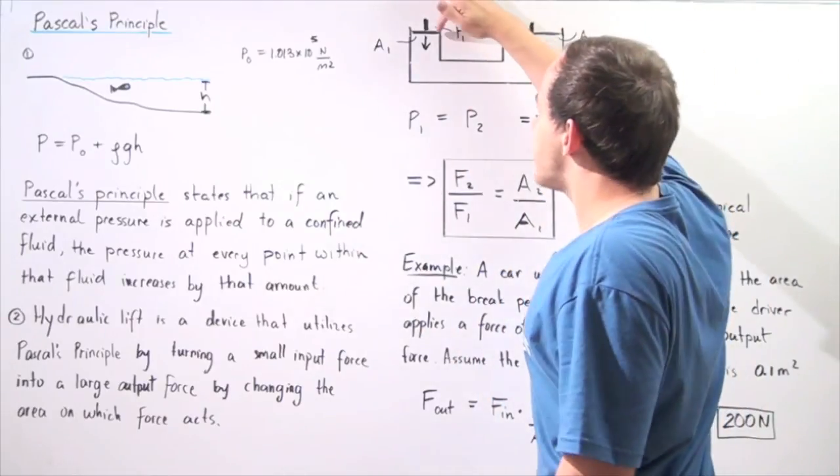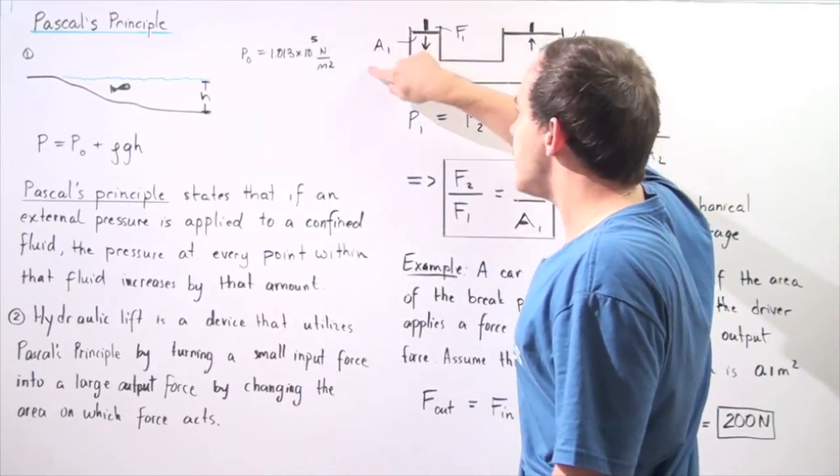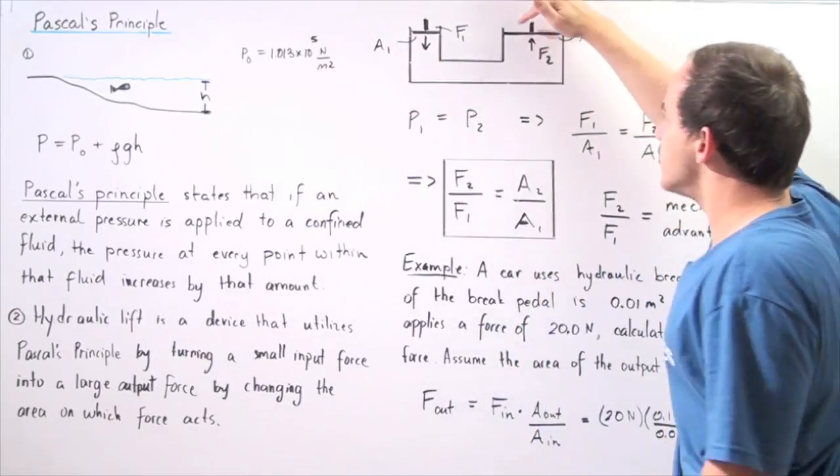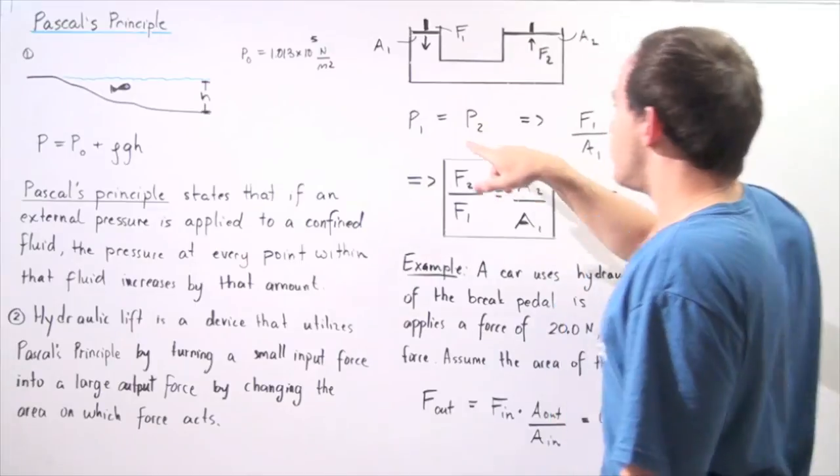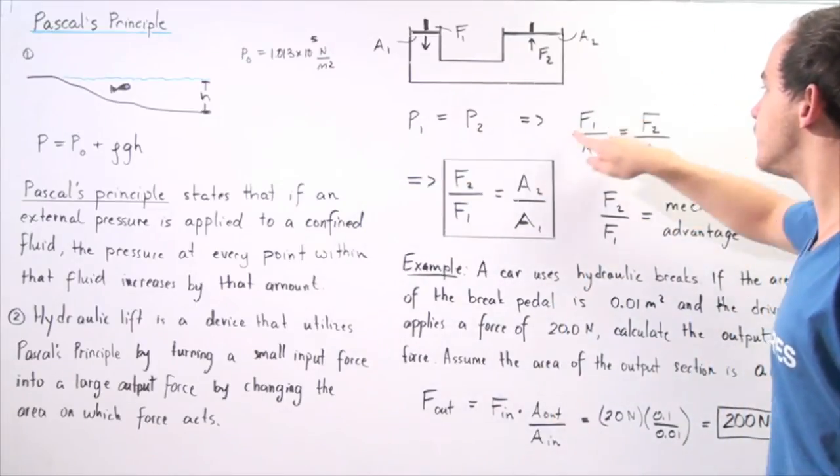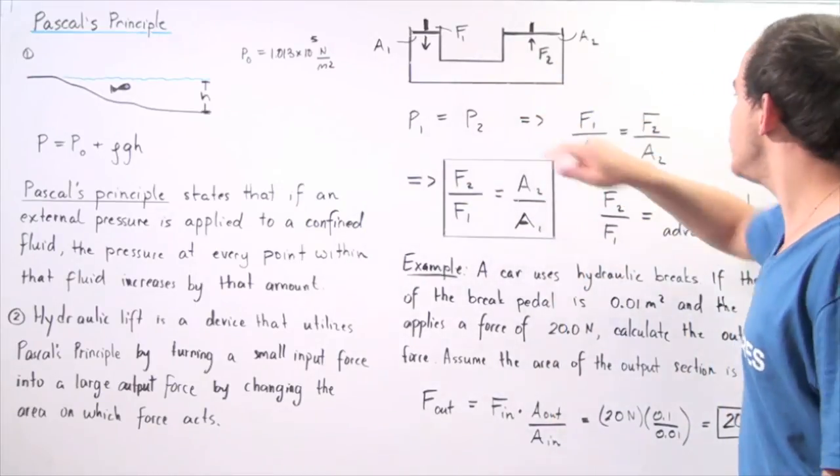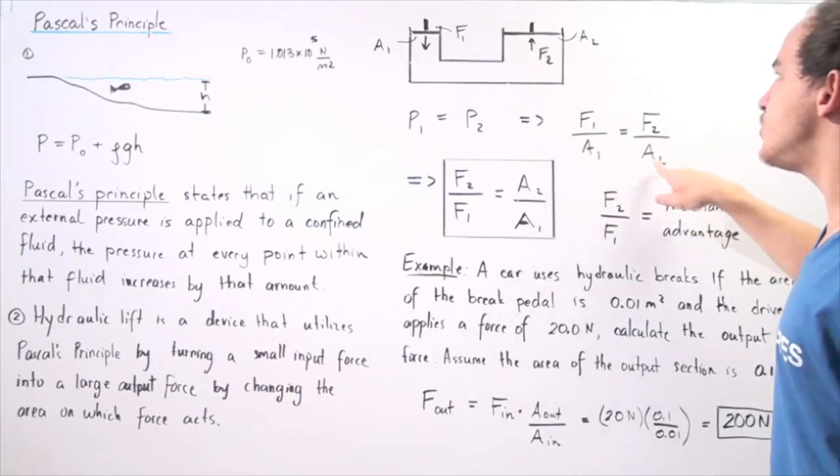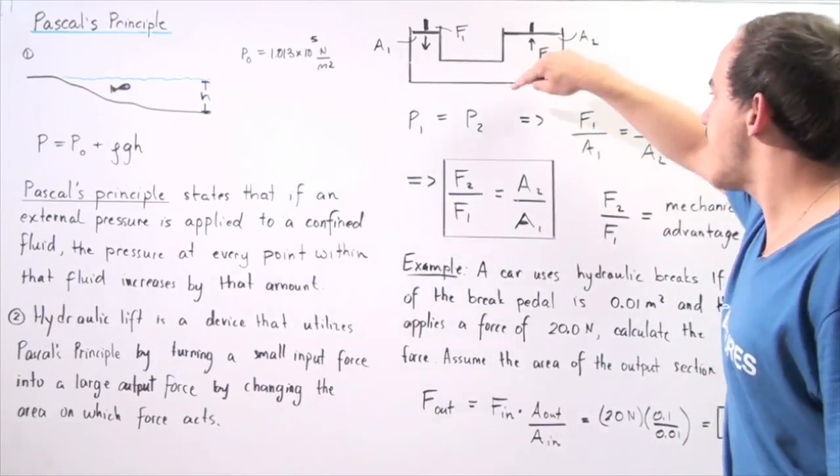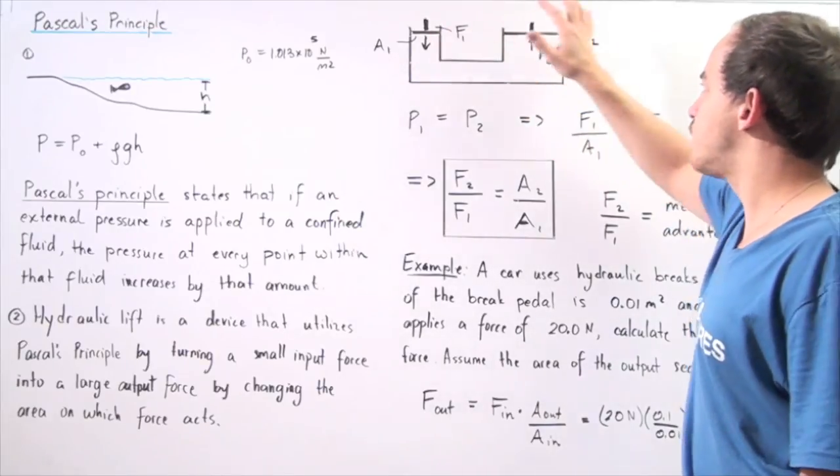Notice that the area of this piston A1 is smaller than the area of this piston A2. P1 is F1 divided by A1 and P2 is F2 divided by A2, where A1 and A2 are the respective areas and F1 and F2 are the respective forces.